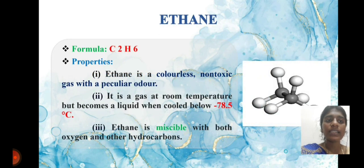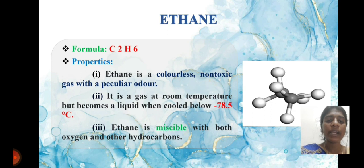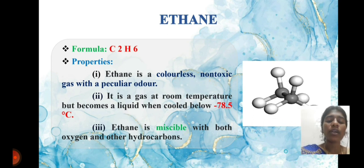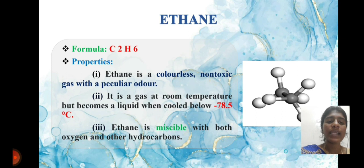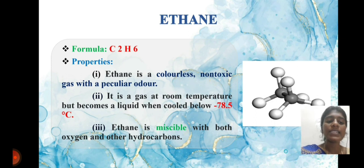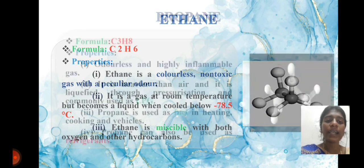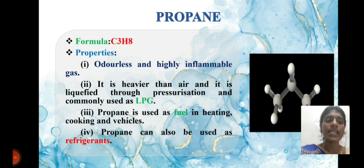Ethane: the formula for ethane is C2H6. Ethane is a colorless and non-toxic gas with a peculiar odor. When cooled down, it reaches minus 78.5 degrees. Ethane is miscible with both oxygen and hydrocarbons.